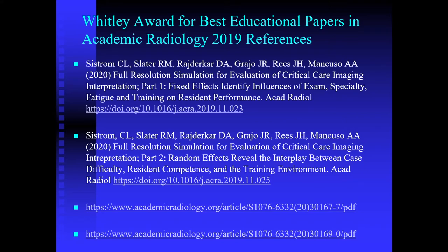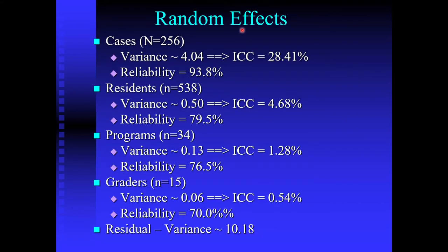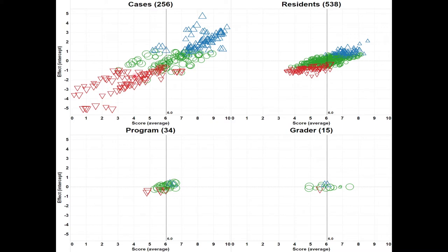The difficulty of the cases, as determined by the scores of the individuals, was highly significant with very high reliability. There was some variance based on the individual resident, but very little difference in scoring based on program, and essentially no variance based on the graders. Here's the data showing the spread of case difficulty, pretty much homogeneity in resident performance, and very little variance caused by the specific program. We've tested about 45 programs throughout the United States.